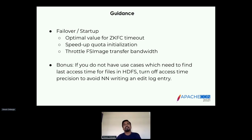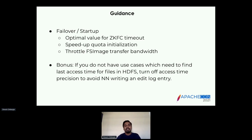A bonus: if your use cases don't need to know the last access time for a file in HDFS, you should turn off access time precision. With the default value tracking last access time, every time a file is accessed, the NameNode has to write an edit log entry. You can turn it off to reduce the number of edit log entries. However, some customers have use cases where they need to see the last access time — for them it cannot be turned off. Check with your apps team and, if you don't have such a use case, just turn off that property.